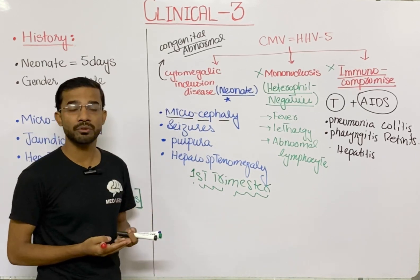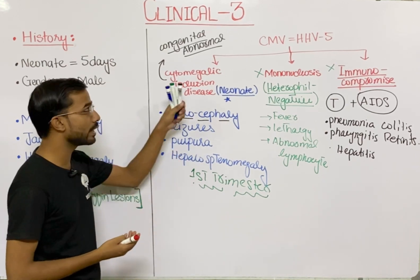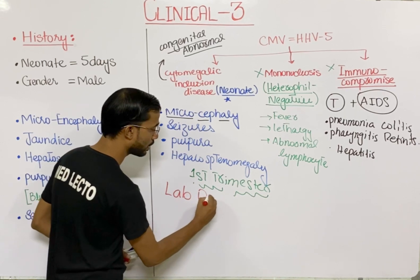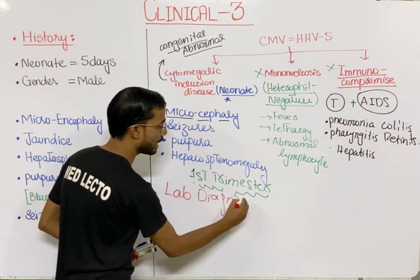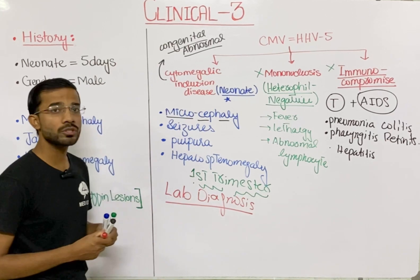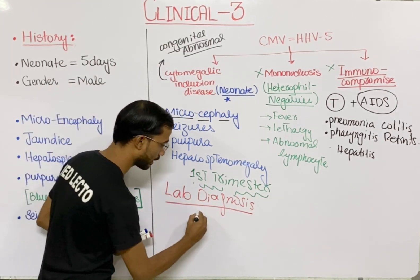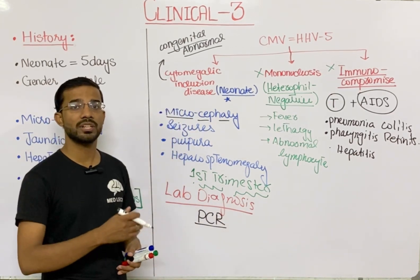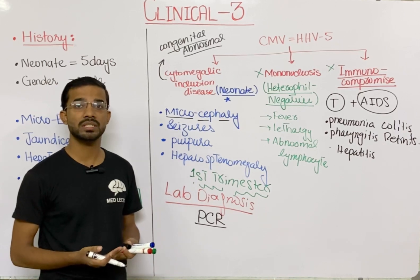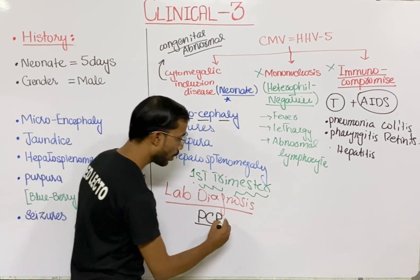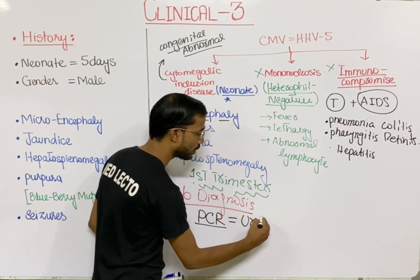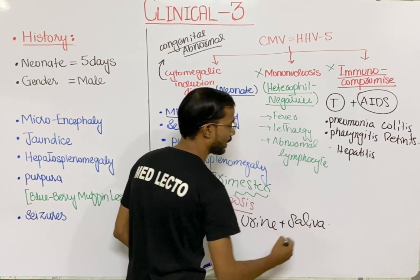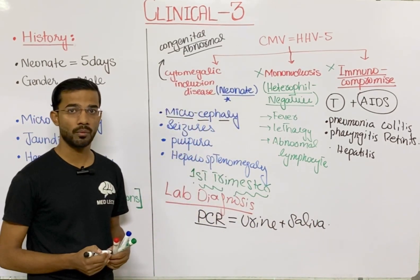To confirm that these symptoms are related to cytomegalovirus, we use lab diagnosis. The most important test is PCR. Cytomegalovirus is excreted in body secretions like urine and saliva, so we perform PCR on urine or saliva to easily detect cytomegalovirus.